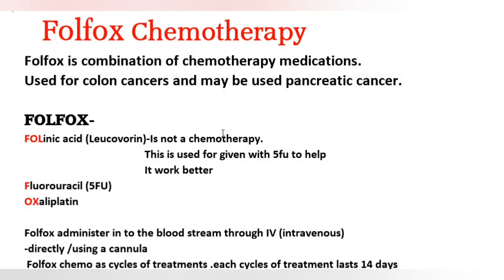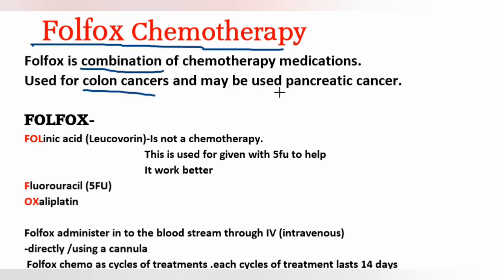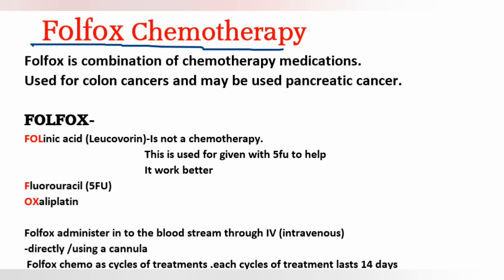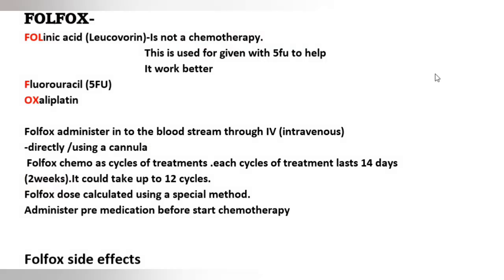FOLFOX chemotherapy is used for colon cancers and is a combination of chemotherapy medications: folinic acid (leucovorin), fluorouracil (5-FU), and oxaliplatin. Folinic acid is not a chemotherapy agent itself but is used with fluorouracil to help it work better. FOLFOX is administered into the bloodstream via IV intravenous line using a cannula.